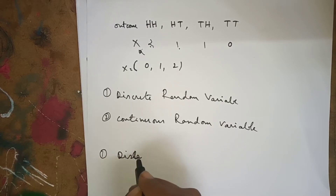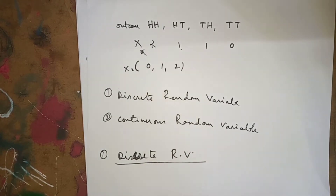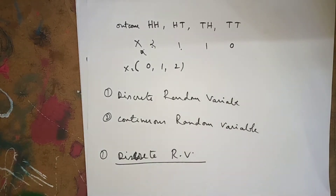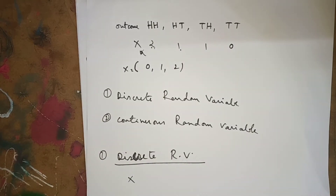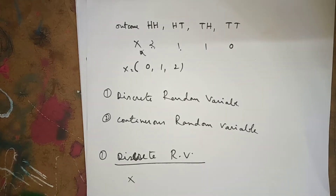When will you say a random variable is discrete? A random variable X is said to be a discrete random variable if it can assume only a countably finite number of real values. For example, within one hour, how many telephone calls will you get per unit time?